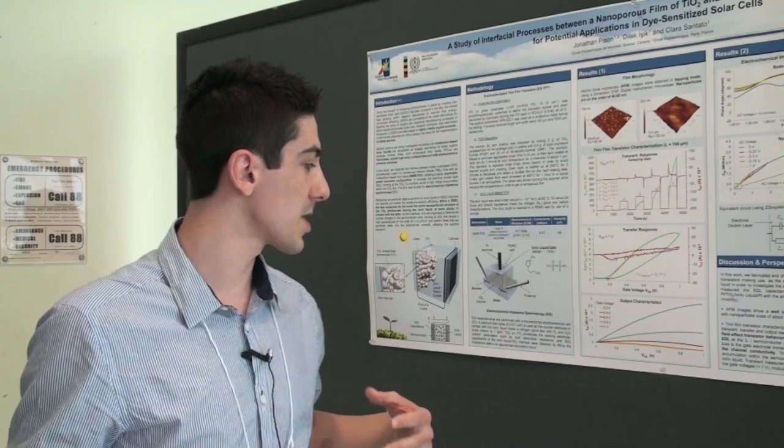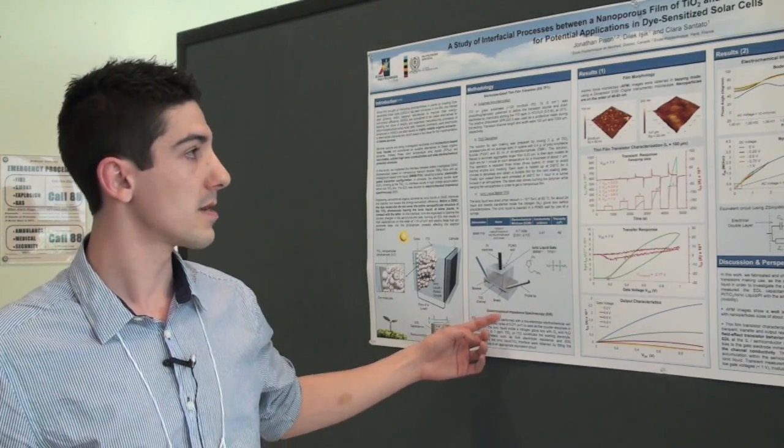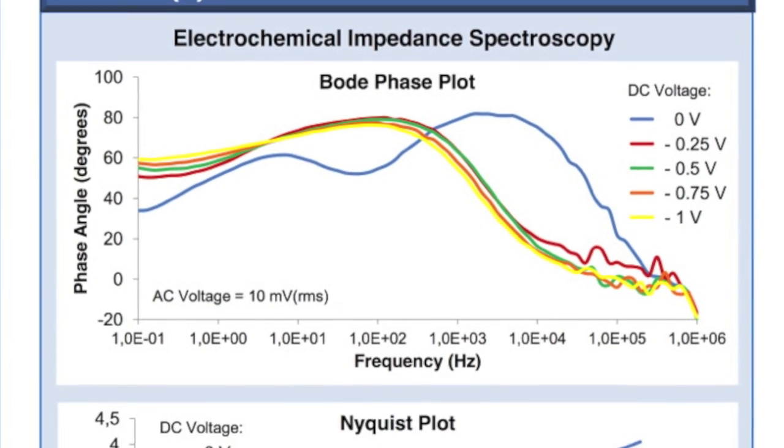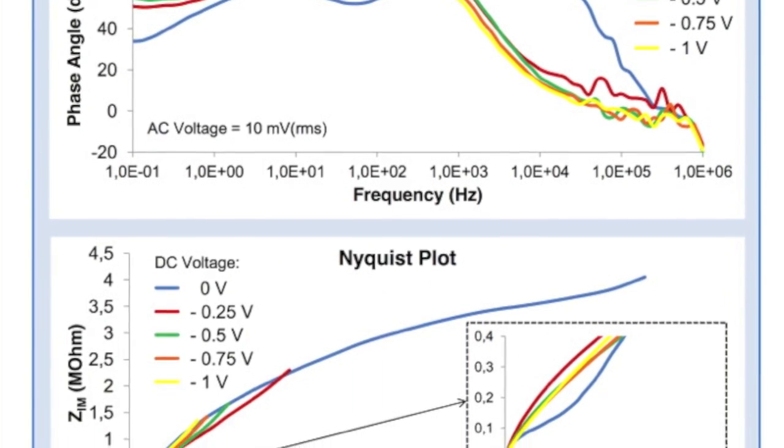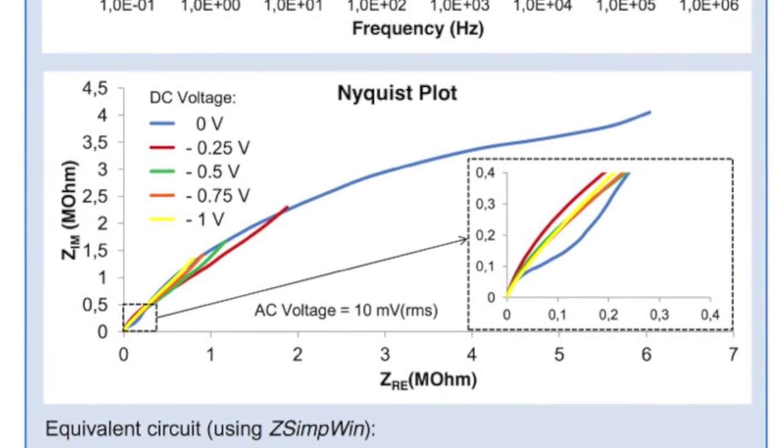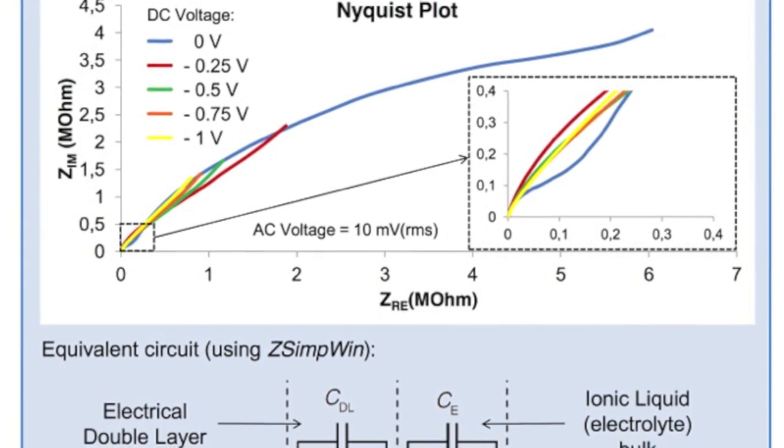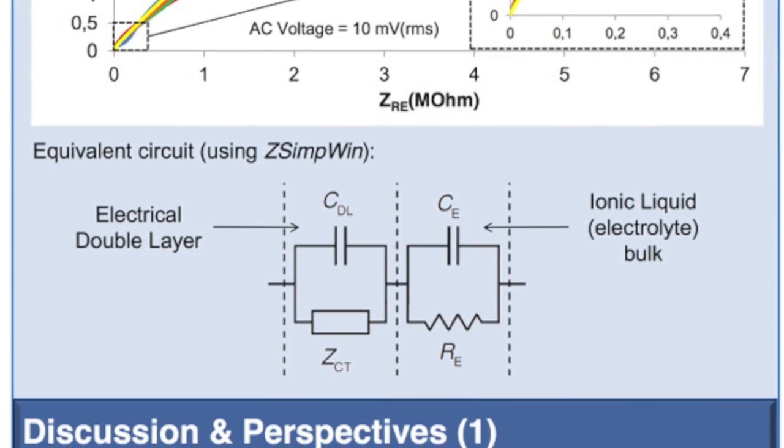So we used another technique, which is the electrochemical impedance spectroscopy. And from the shapes of the plots we obtained, the Bode and Nyquist, we actually came up with an equivalent circuit, which is this one here. And we calculated the capacitance of the double layer. And it was very high, like a few microfarads per centimeter square.